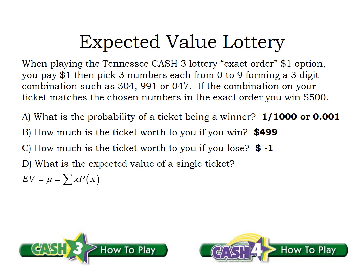So let's look at the math. We're looking for the population mean, which is just the weighted average of values times their probabilities. Here we only have two values: $499 and negative $1. Our first value is $499, and the probability of that happening is 0.001. We add to that negative $1, which happens 999 times out of a thousand. So on average, we end up with negative $0.50.